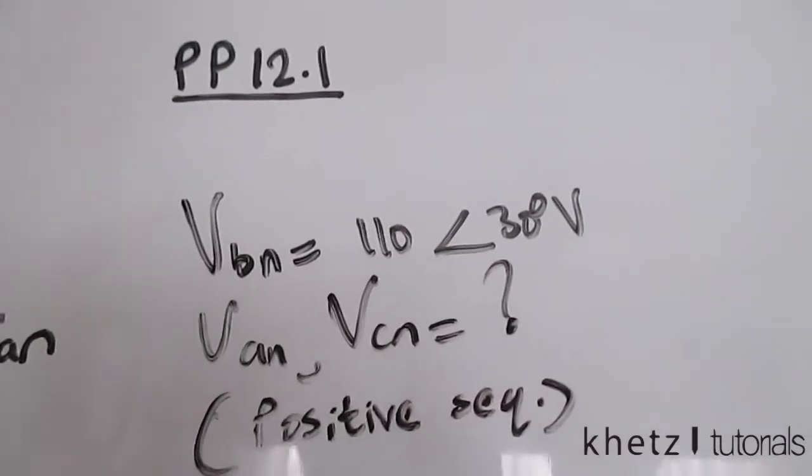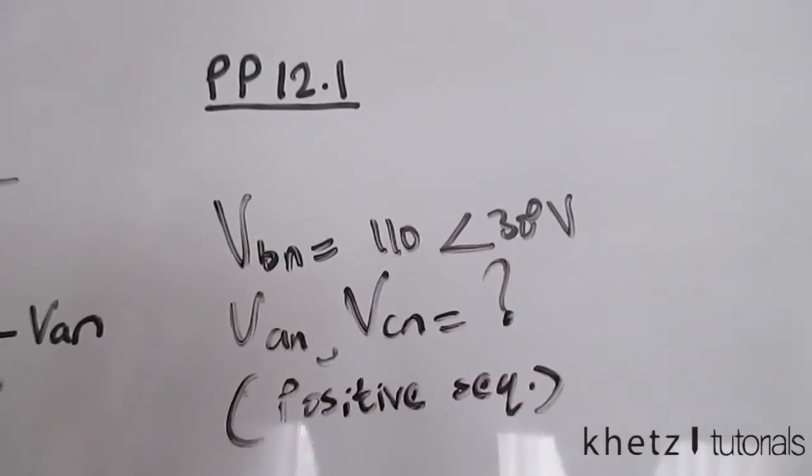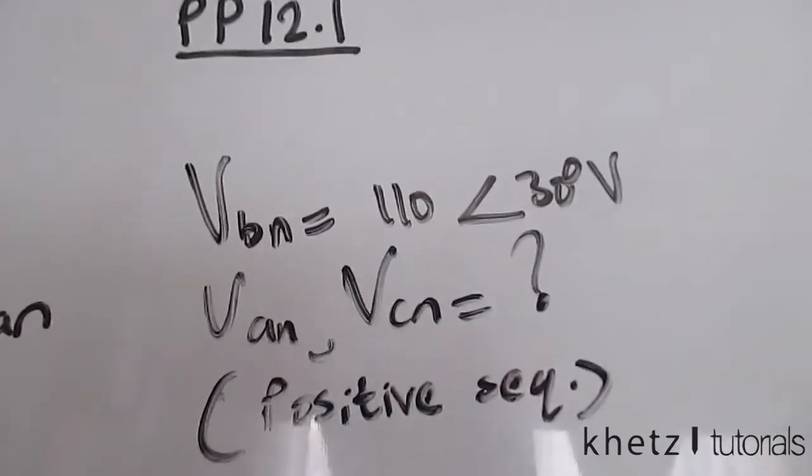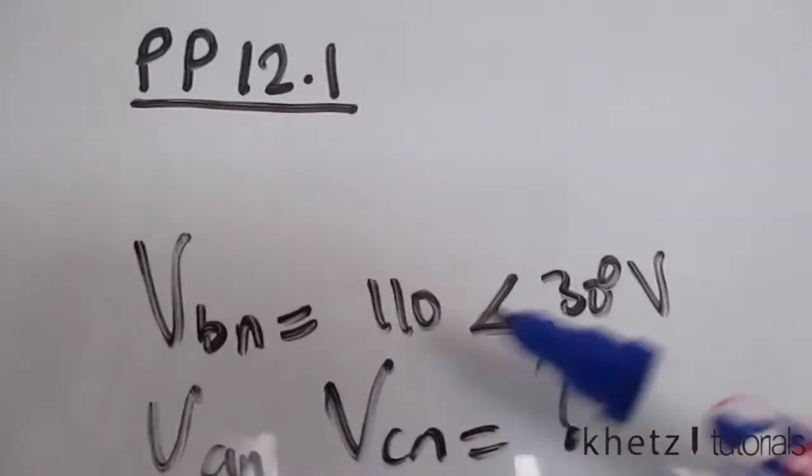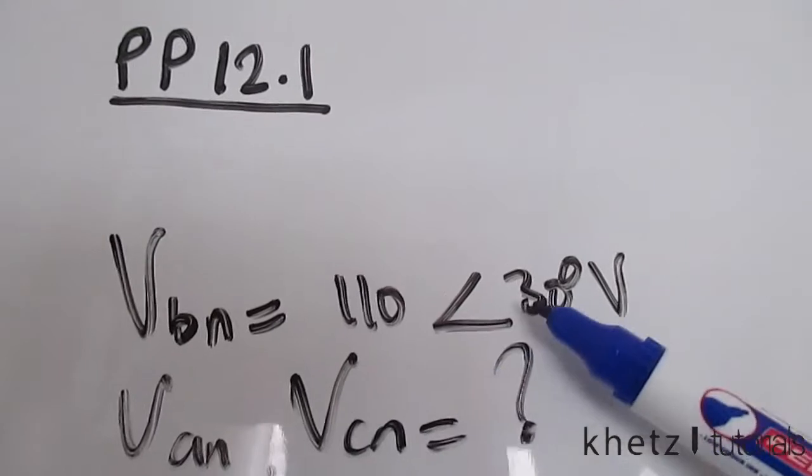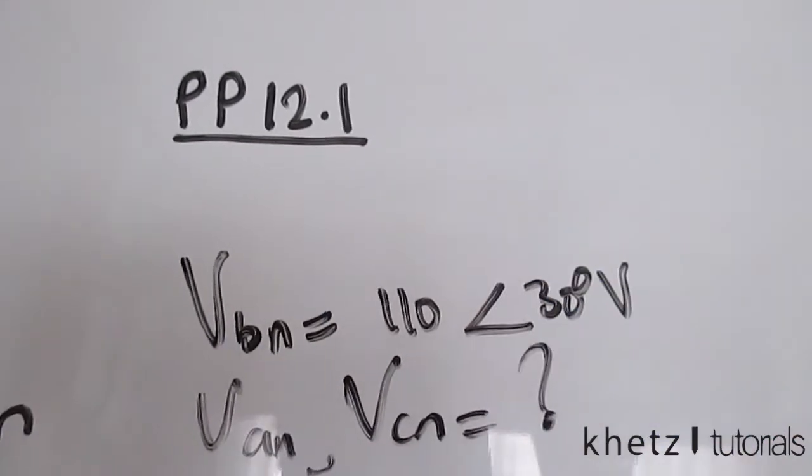Welcome to CAT tutorials and in this video I'll be covering practice problem 12.1. Now we are given VBN of 110 with an angle of 30 degrees and that is the voltage.